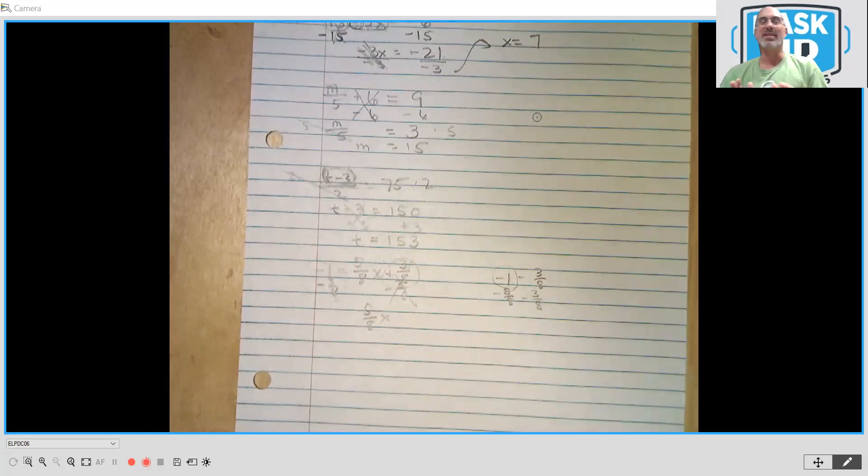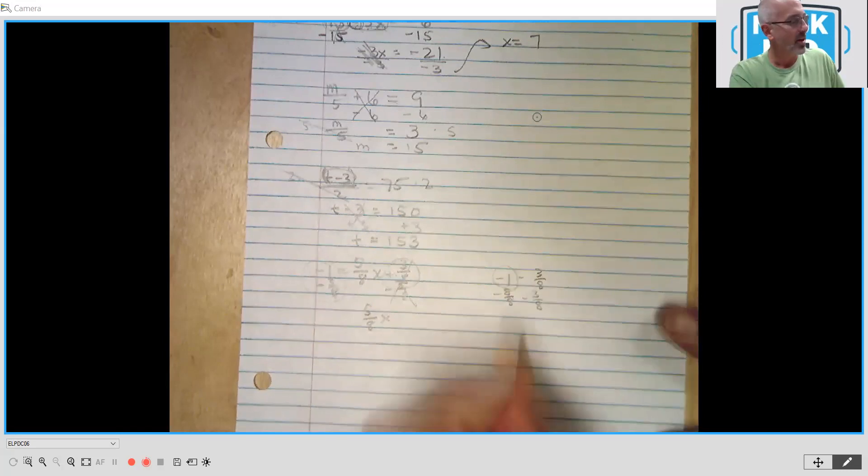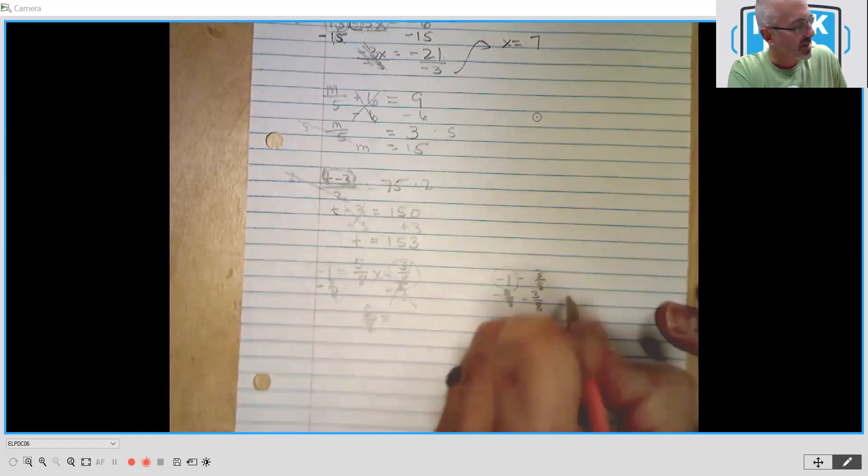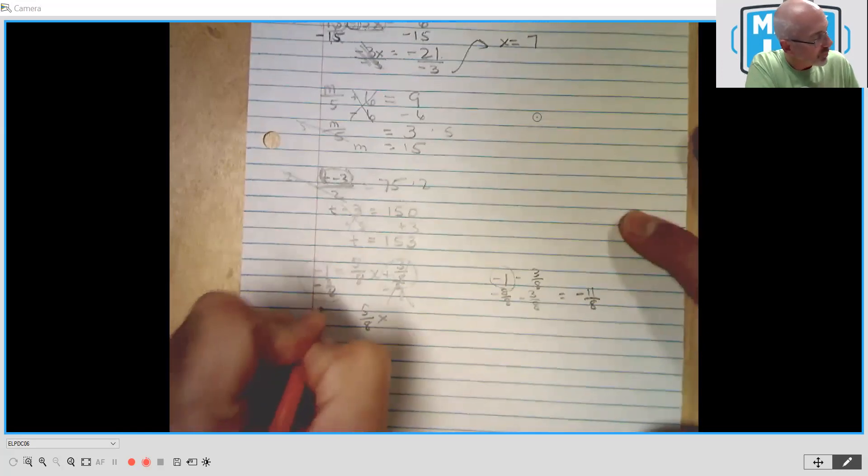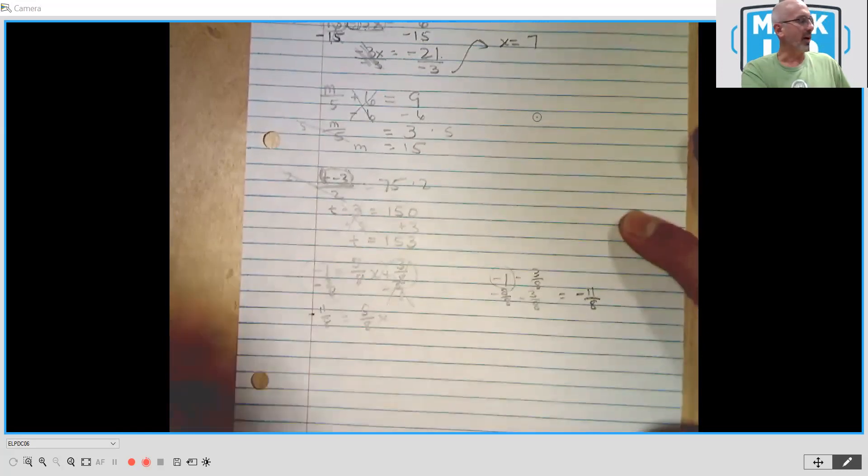Now here's again, we're subtracting a number from a negative number. So we have to know what we're doing. So think in your head, where is negative 8/8 on the number line? That's negative. Then we're going to move another 3/8 beyond that. So what this actually is, is negative 11/8.